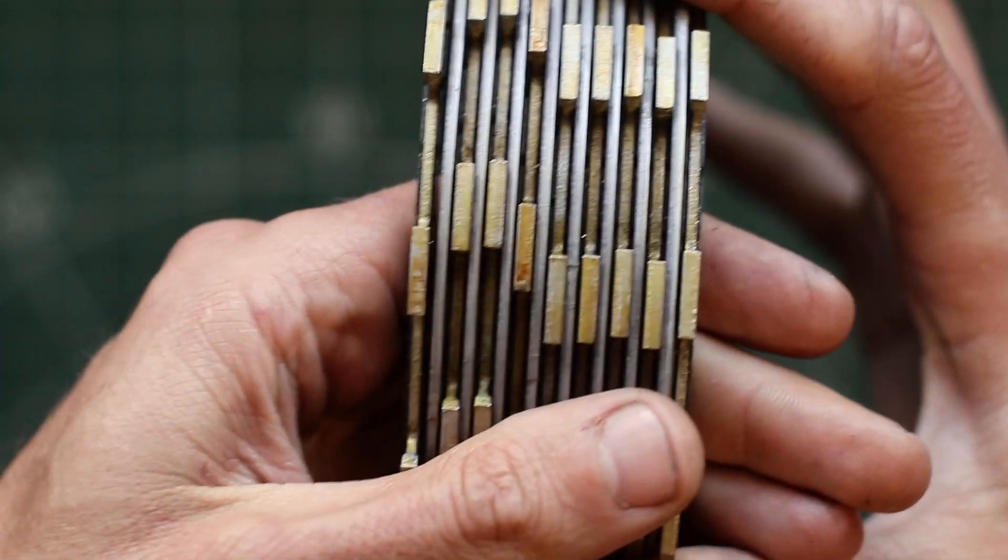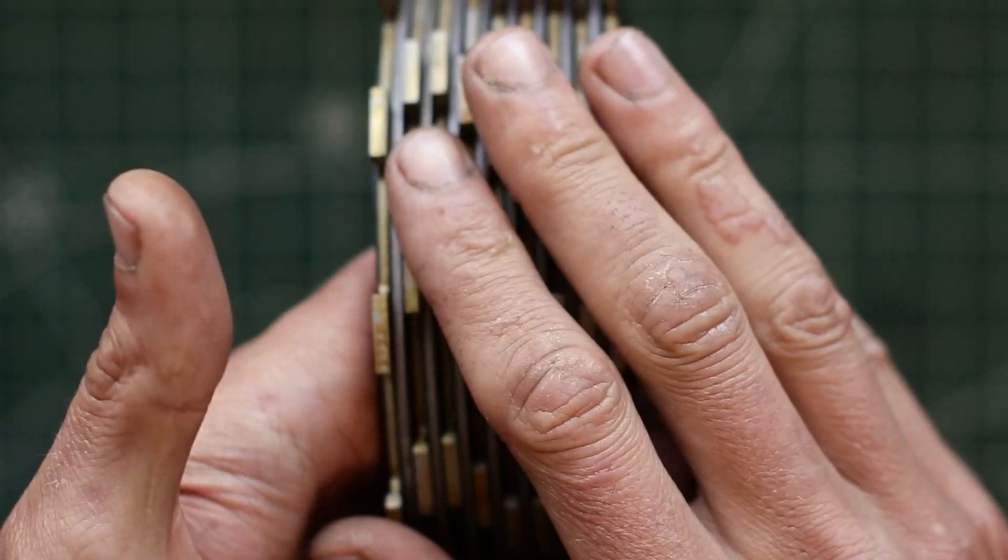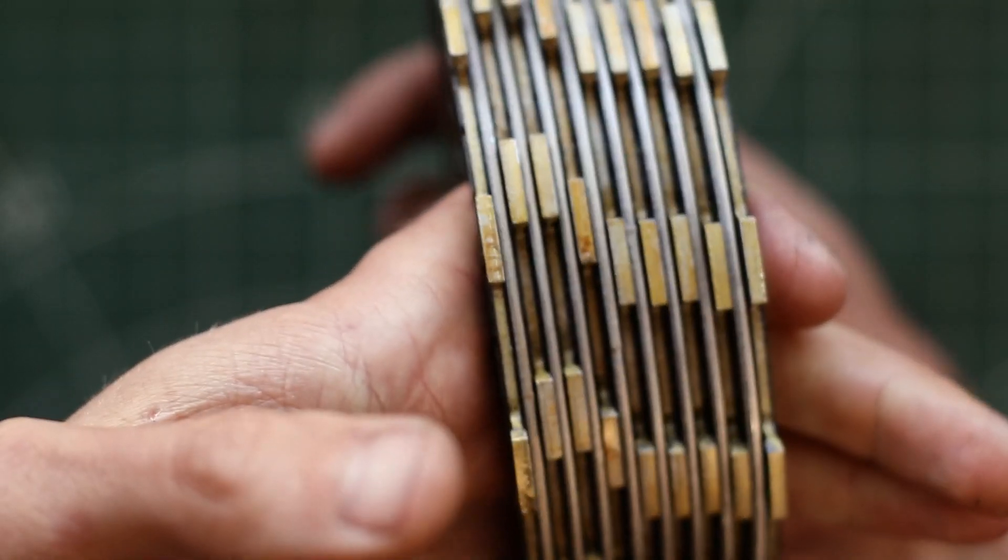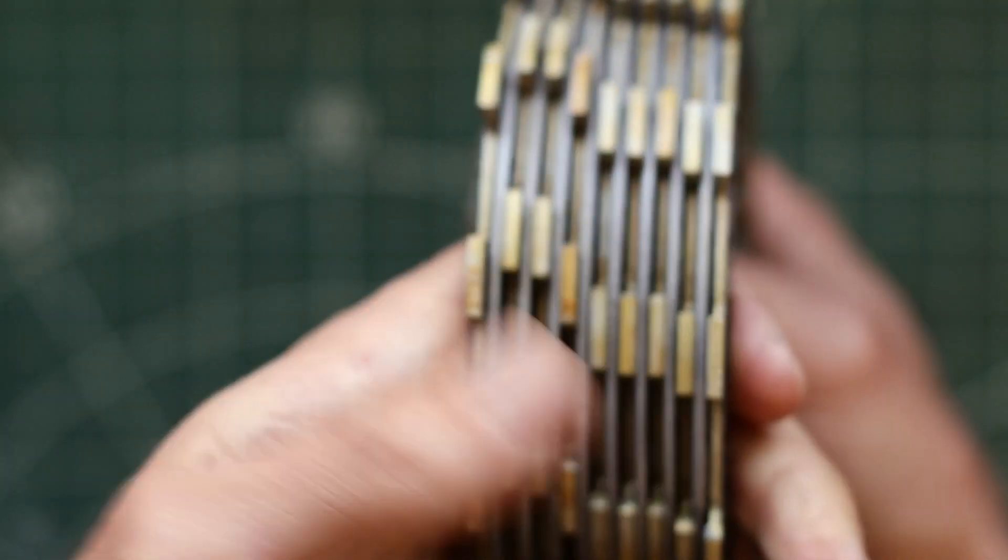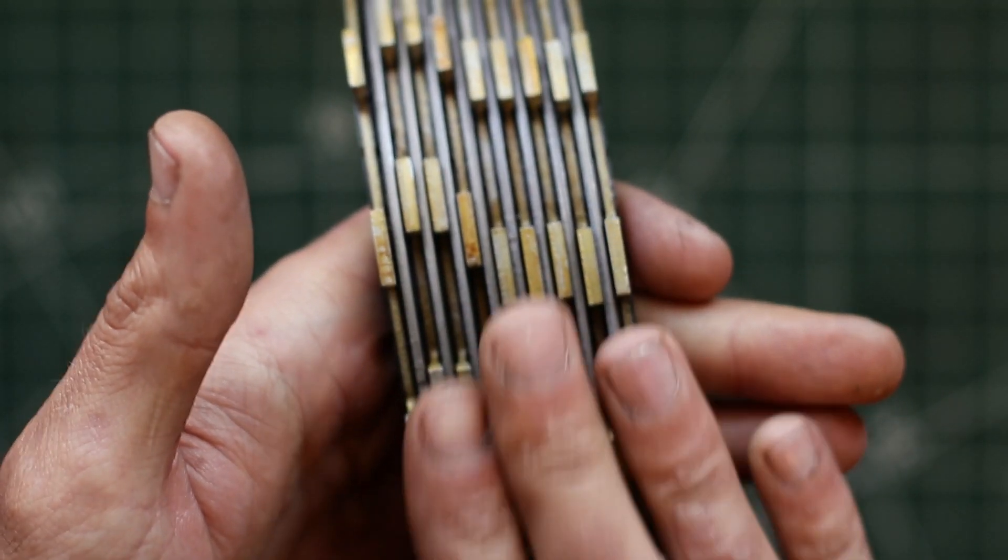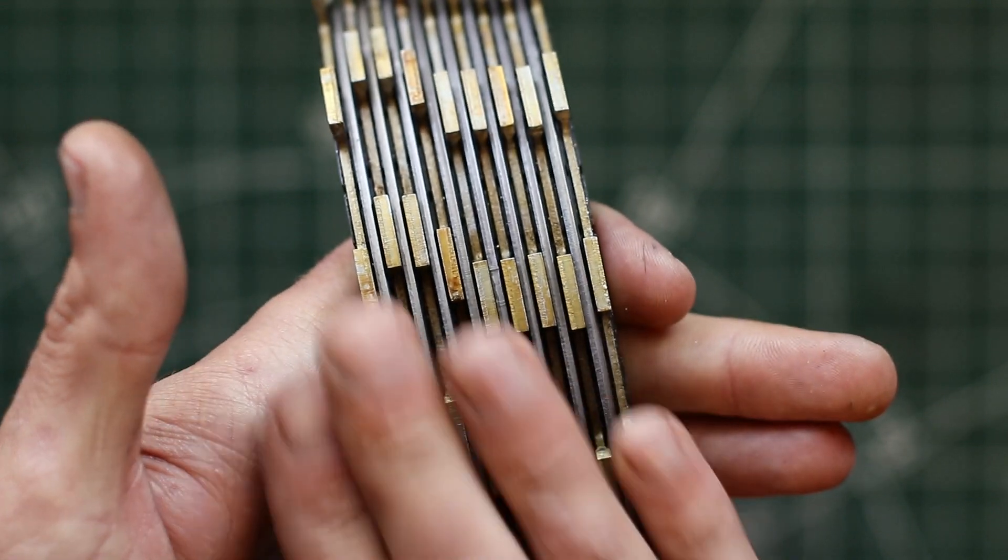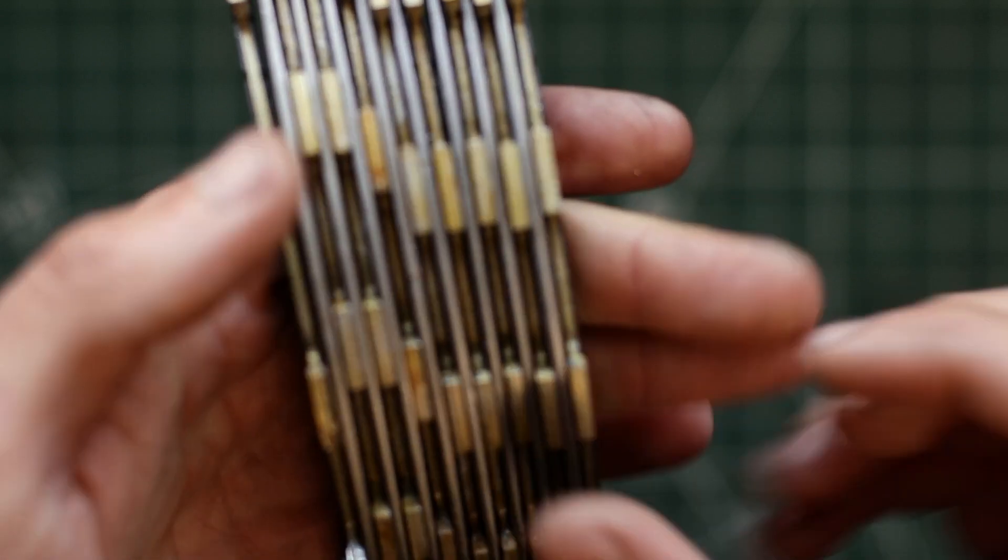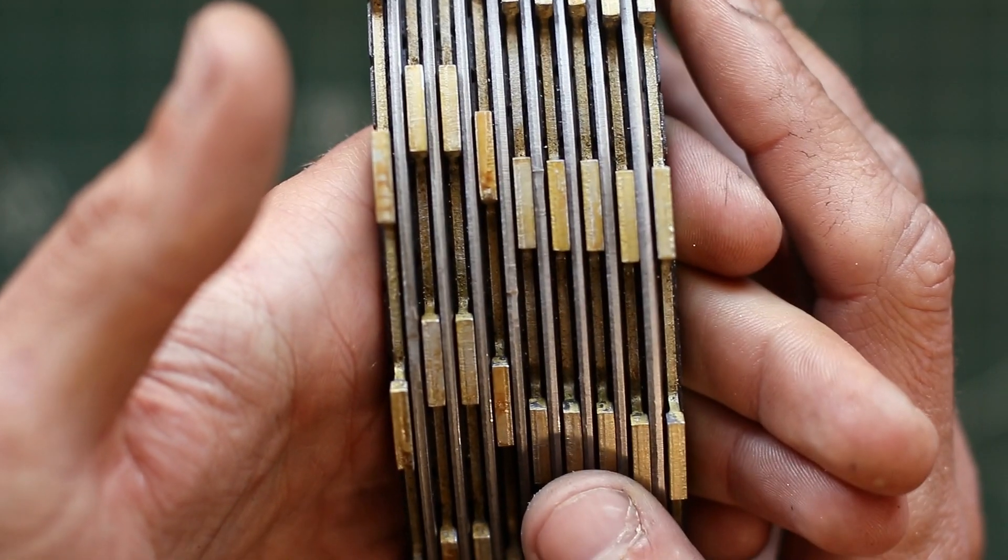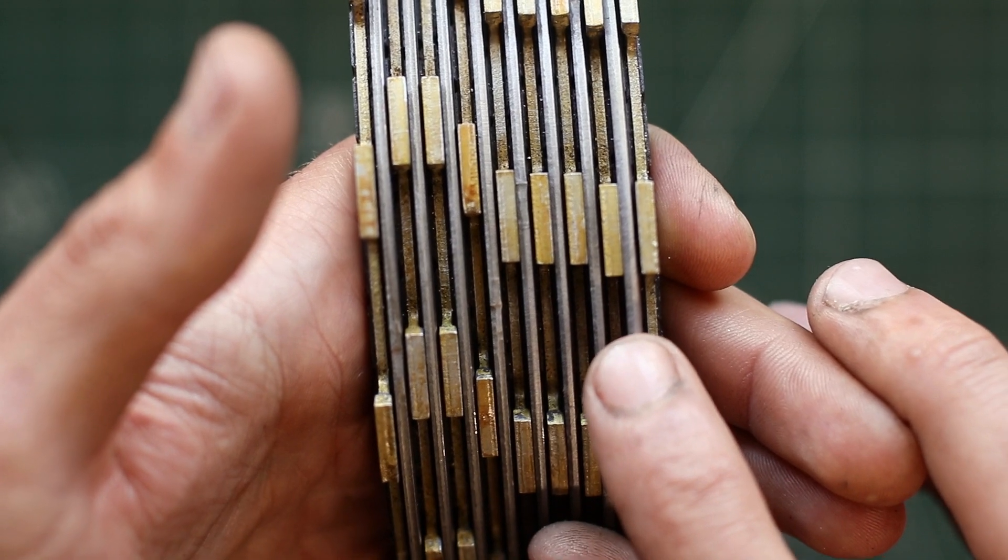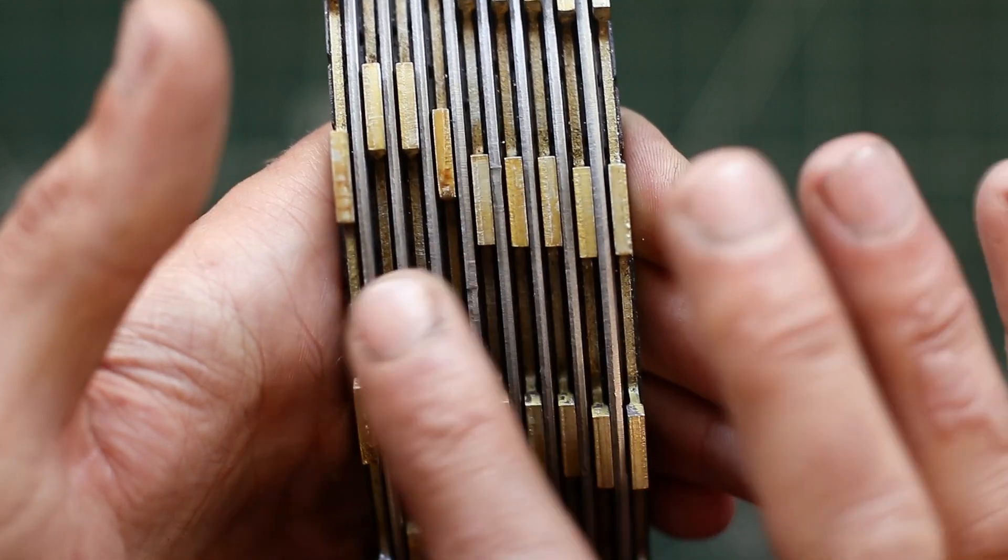So in order to measure things, we need to separate the clutch stack. This is the exact way I took them out of the bike. We're not too fussed about the order of the clutch plates apart from one. I'm not sure if you can see that on camera, but this one here is slightly thicker than all the rest.